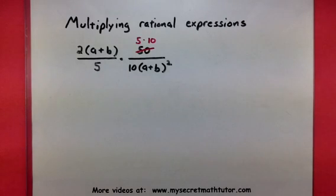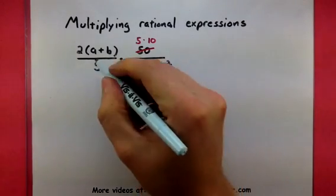The reason why I'd want to do that is because notice how we have a 5 in the top and a 5 in the bottom. It means those 5s will cancel out.